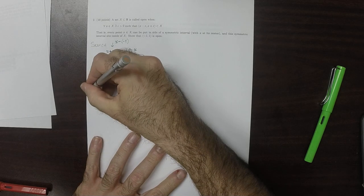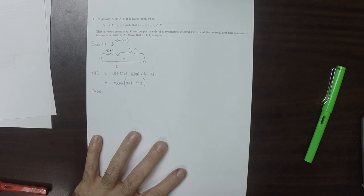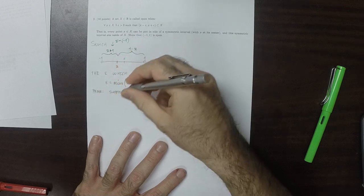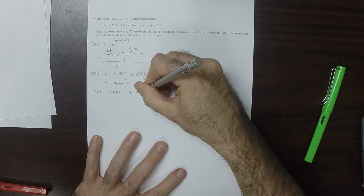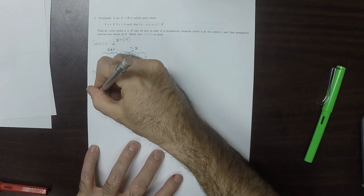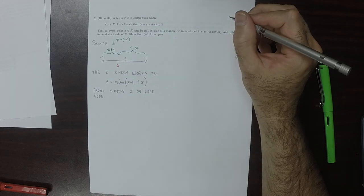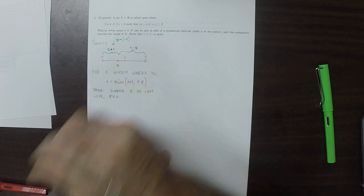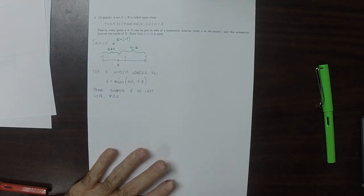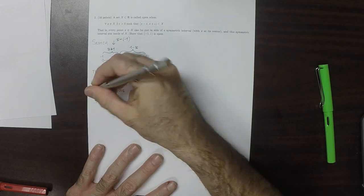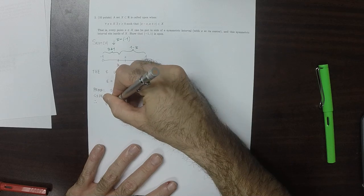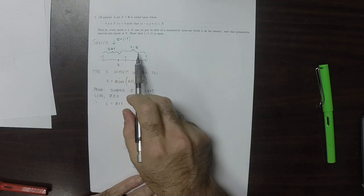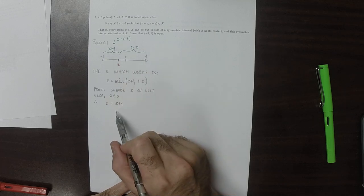So let's prove it. Suppose that x is on the left side. In particular, we could assume that x is less than or equal to zero. As a result, epsilon is x plus one. In the case that x equals zero, both values are the same — they both equal one — so this is still correct.